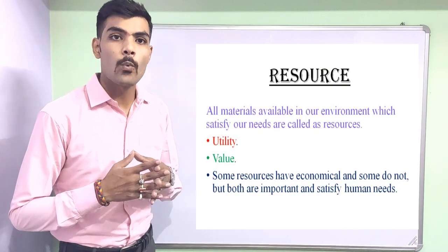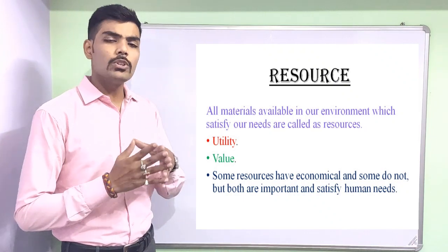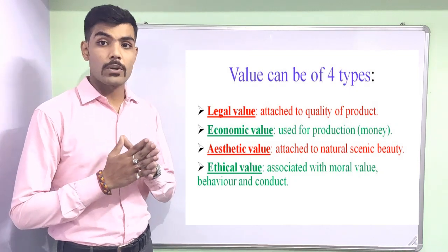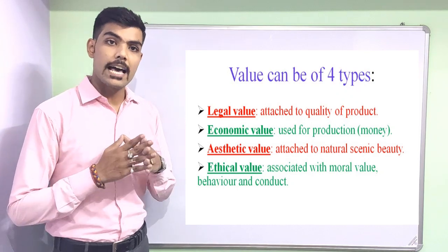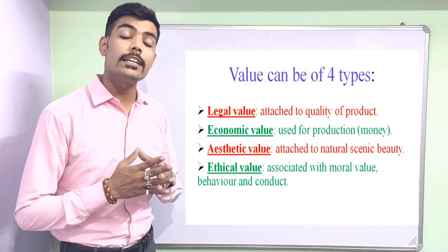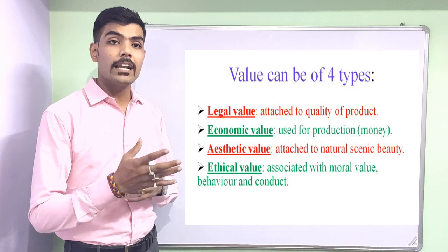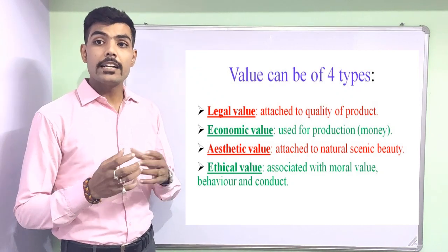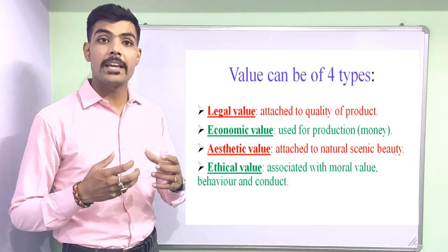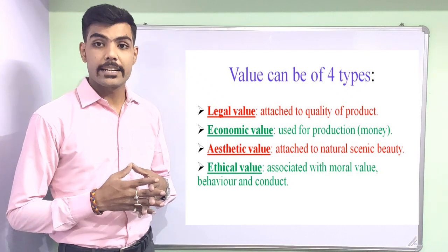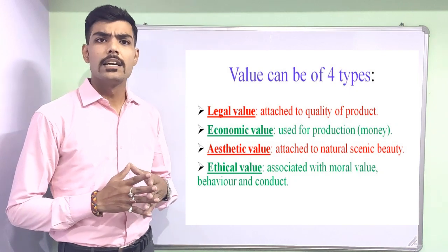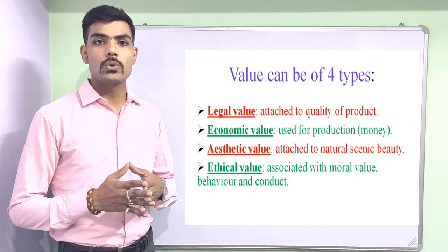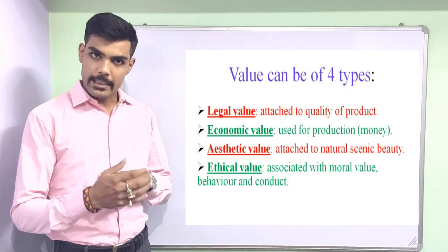Do you know what value means? Value means worth. Everything that has some utility will surely have some kind of worth. Let me tell you something that is not given in the NCERT book: there are four types of values — Legal Value, Economic Value, Aesthetic Value, and Ethical Value. Legal value is related to the quality of a commodity, whereas economic value is attributed to the use of the product. Aesthetic value is related to natural scenic beauty, and ethical value is related to moral behavior, values, and code of conduct. So it's not necessary that all things with utility will have only economic value; they may have different types of value.